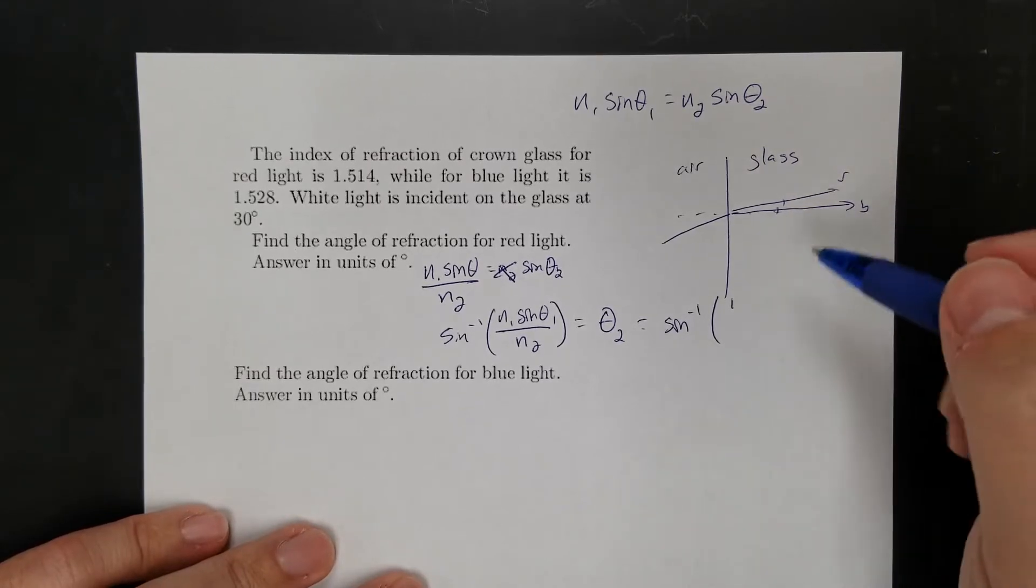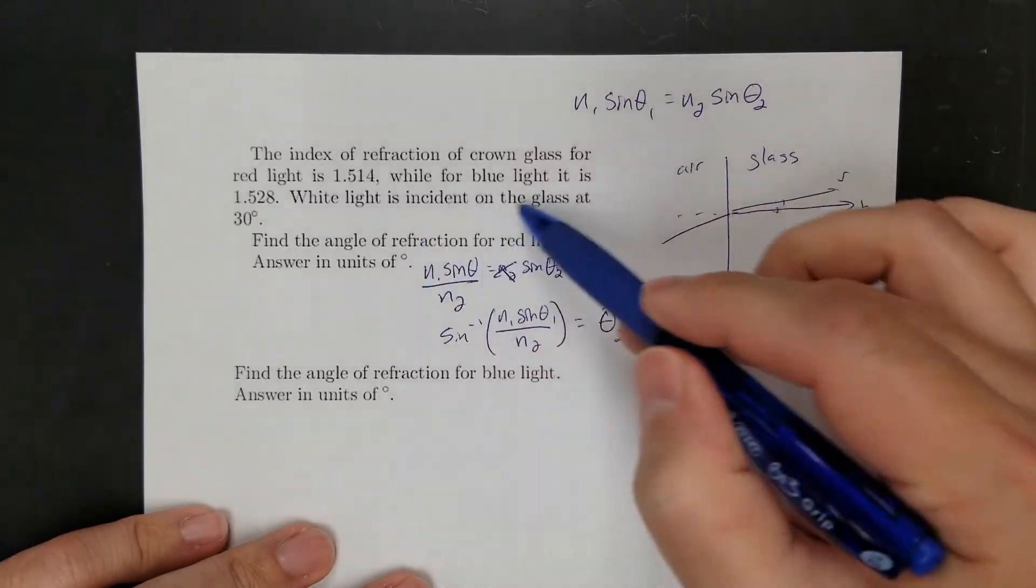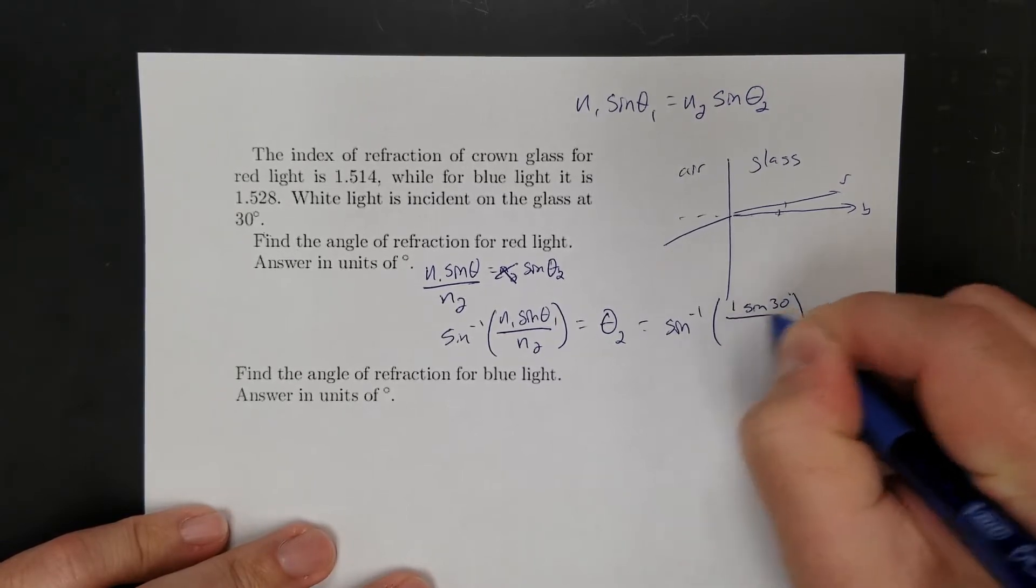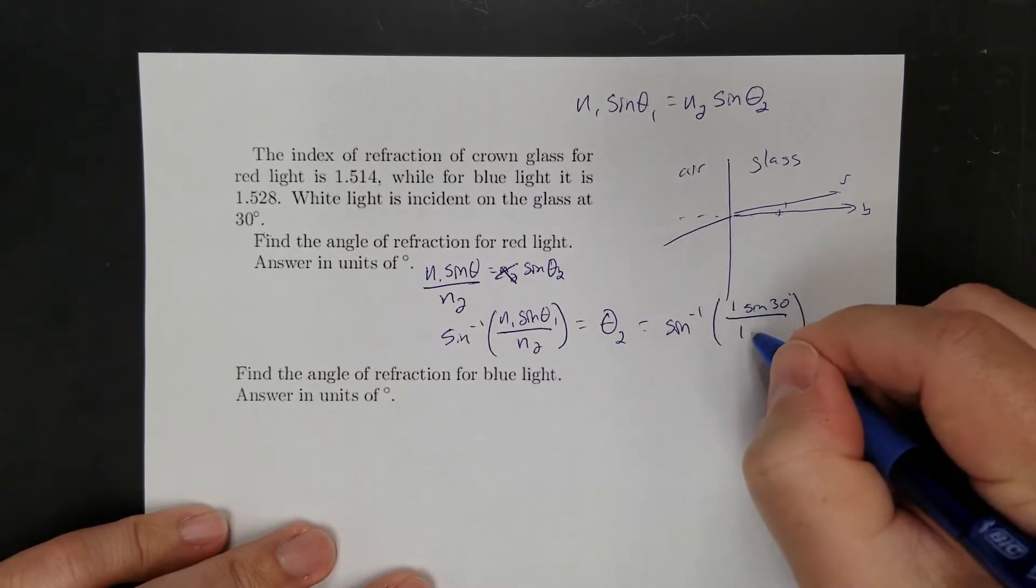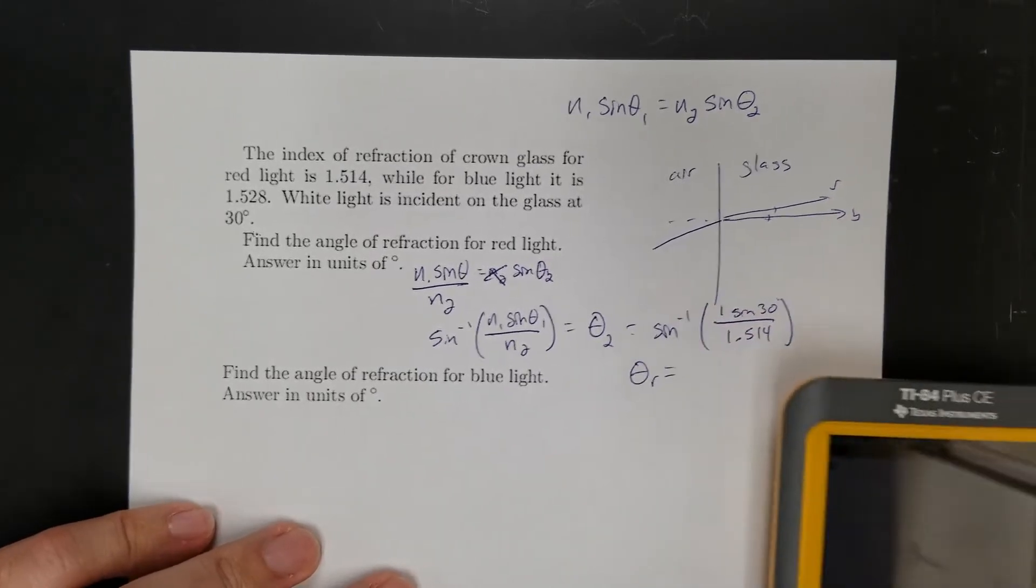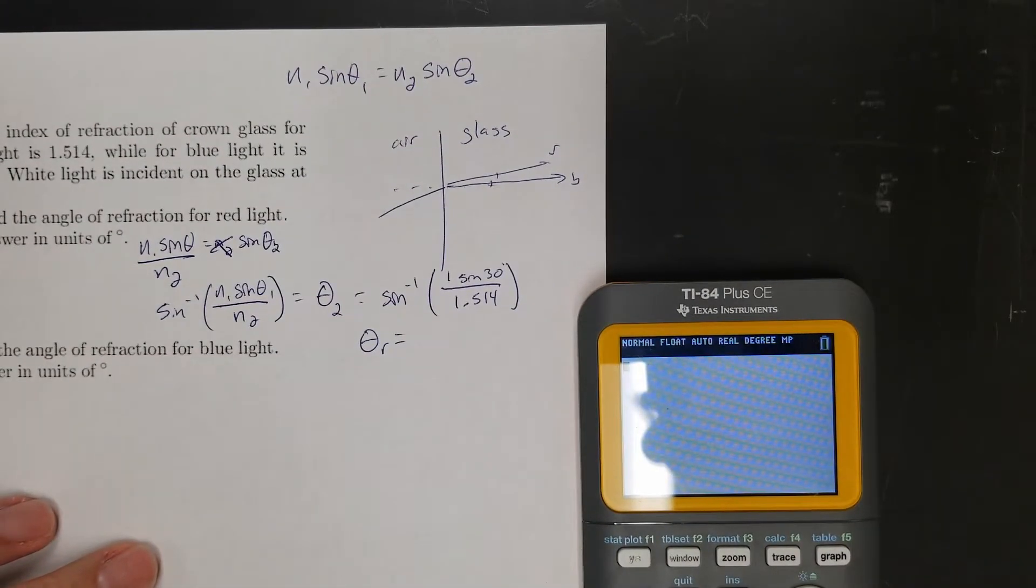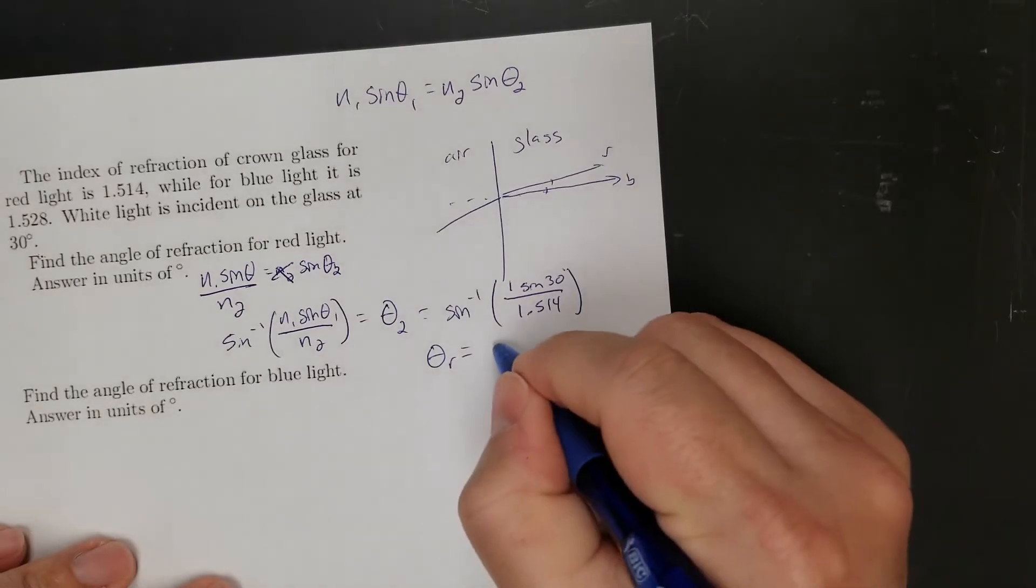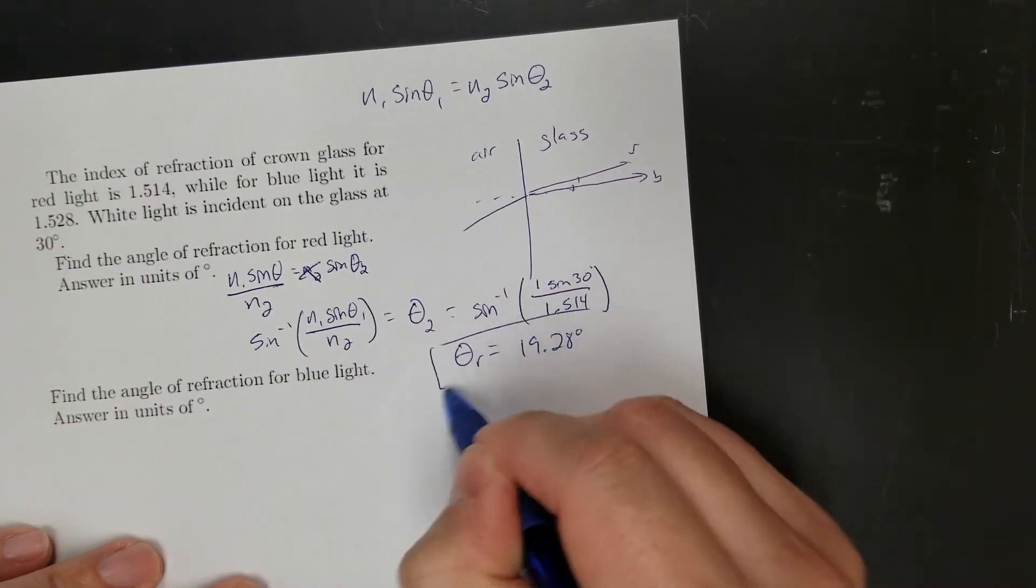So that's going to be the arc sine of N1 is air. Air has an index of refraction, but it doesn't tell you it's 1. Theta 1, it tells me that the incident angle was 30 degrees. So 1 sine 30 over red light's index is 1.514. And so if I do that, I get, let's find out, sine 30 over 1.514. No, I got to do sine 30 first. Sine 30 over 1.514. And then I take the arc sine, gives me 19.28 degrees. That's my angle for the red.